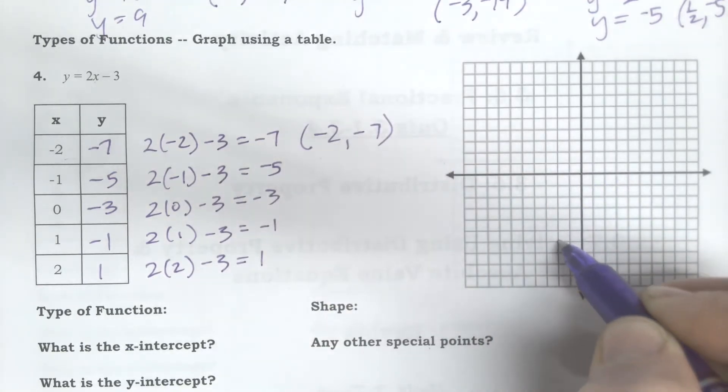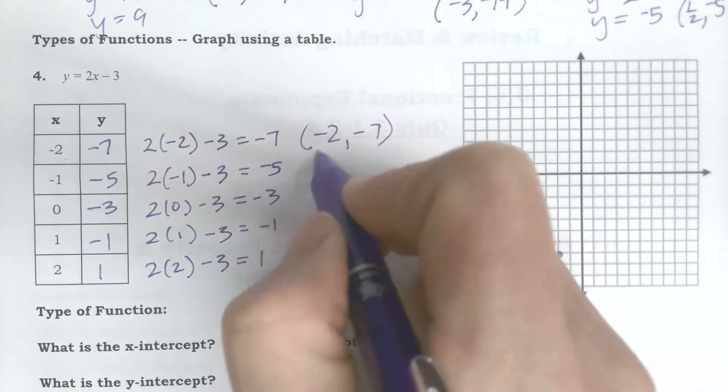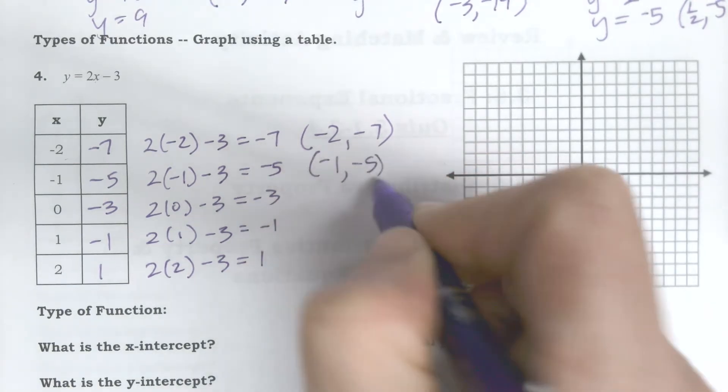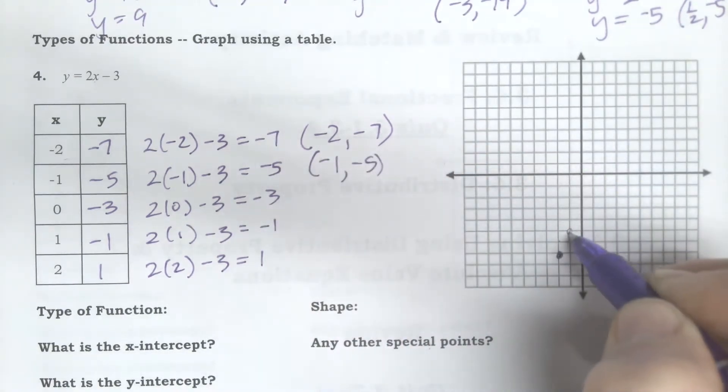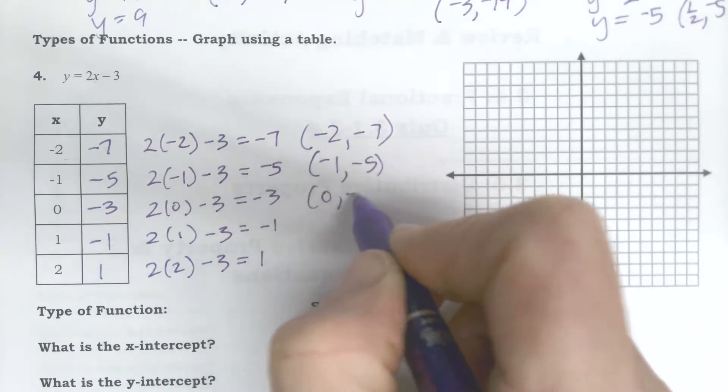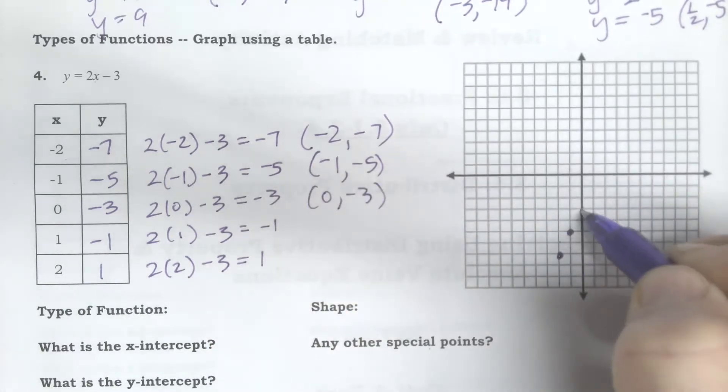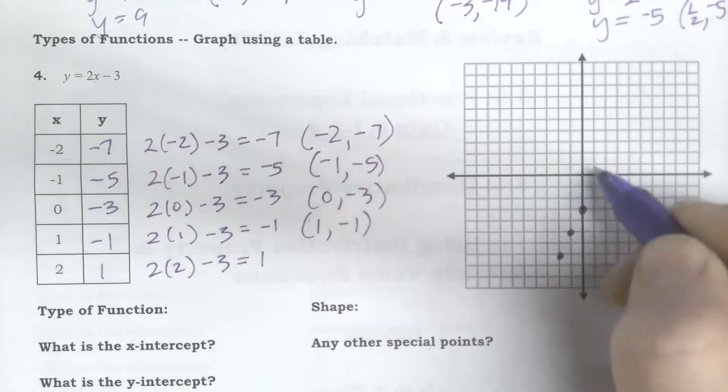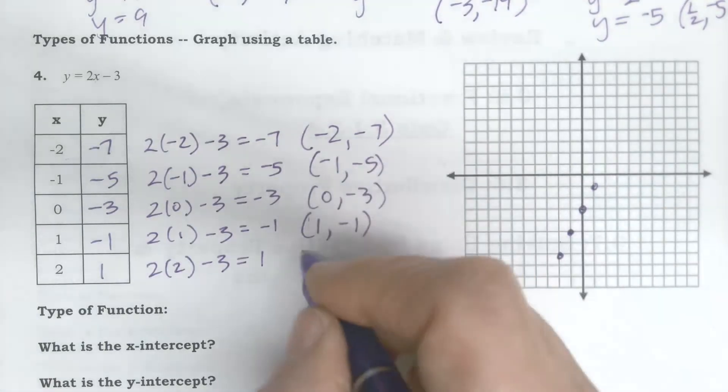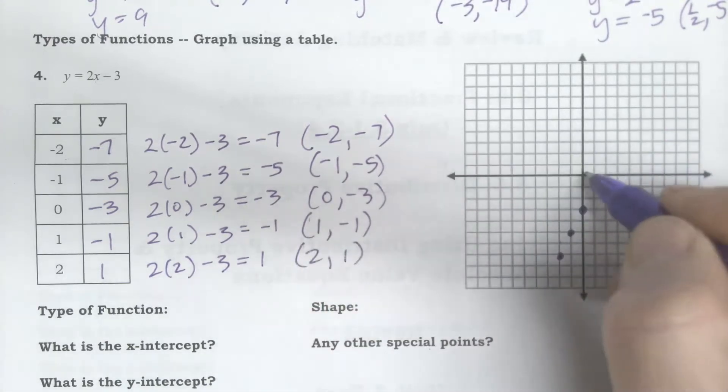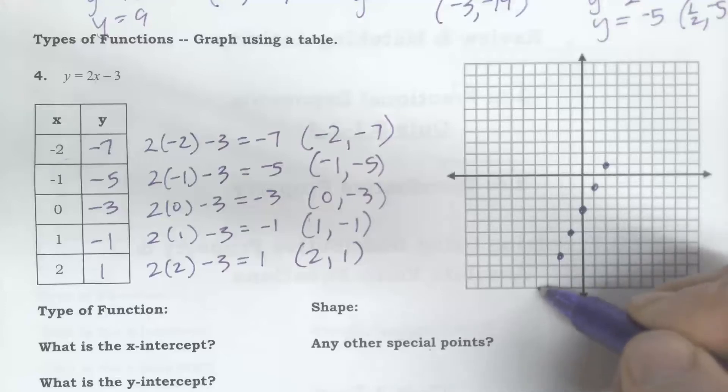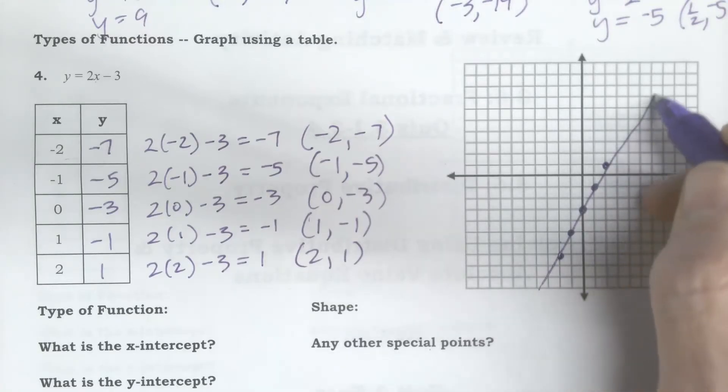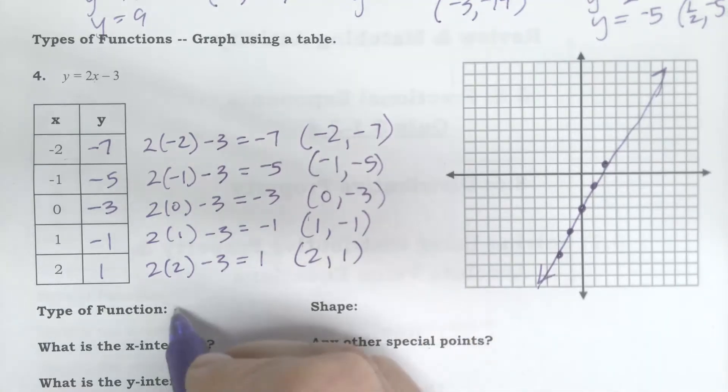And so then I plot that point as negative 2, negative 7, left 2 down 1, 2, 3, 4, 5, 6, 7. The next one is negative 1, negative 5, left 1 down 5. 0, negative 3, just down 3. 1, negative 1, right 1 down 1. And 2, 1, right 2 up 1. And then when I connect those I make my function. I form a line because that's a line.